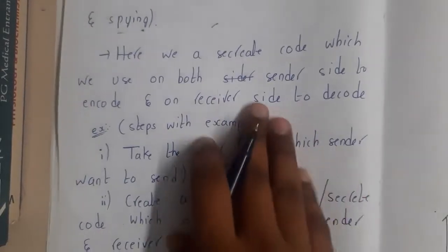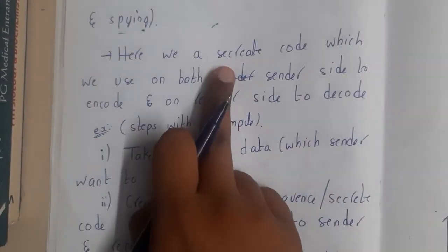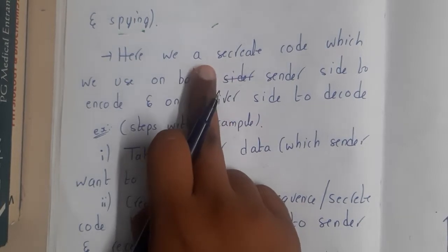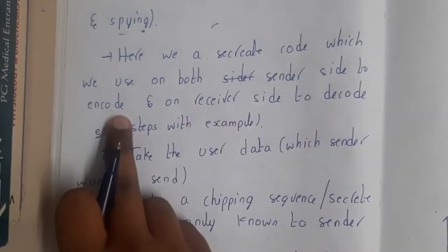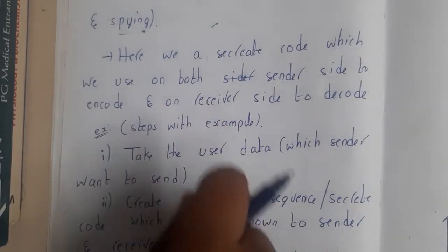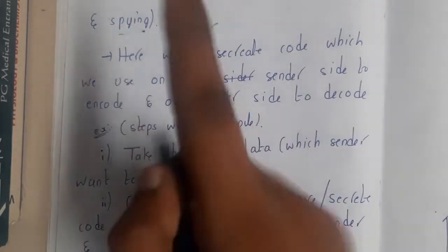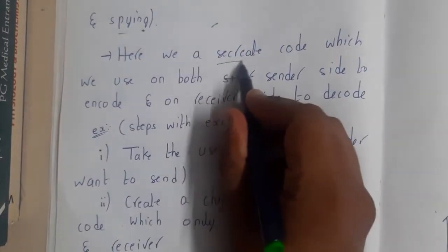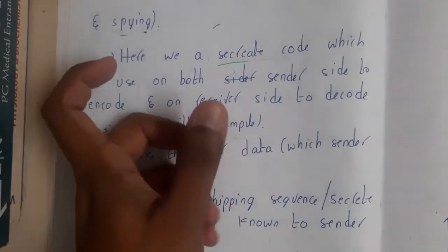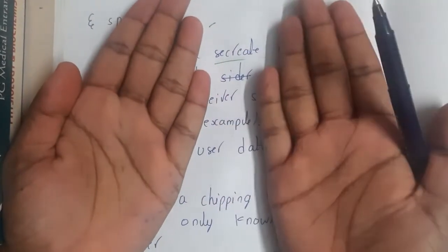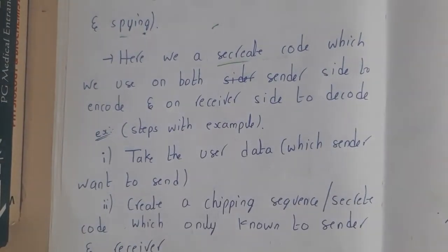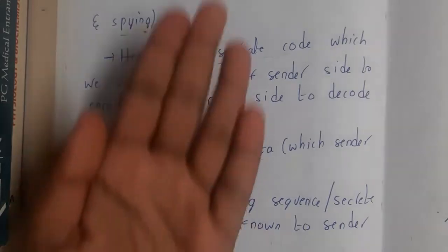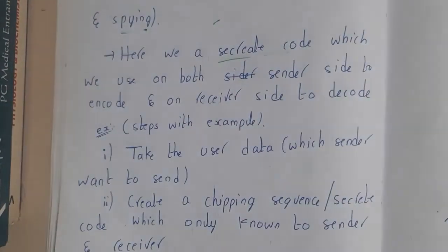Here we use a secret code on both sender and receiver sides. In cryptography we call it a key. Similarly, here we call it a secret code. That secret code is with you and the receiver, but not with any third party. Only you and your friend have it, so that's safe.